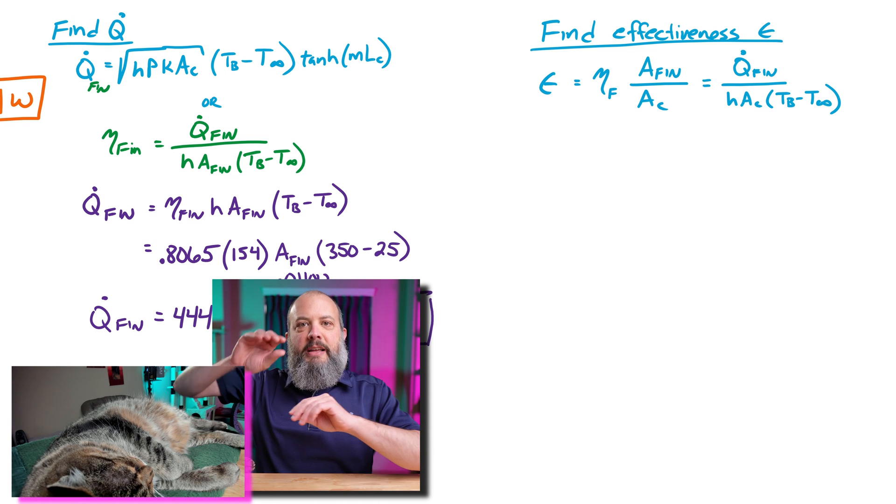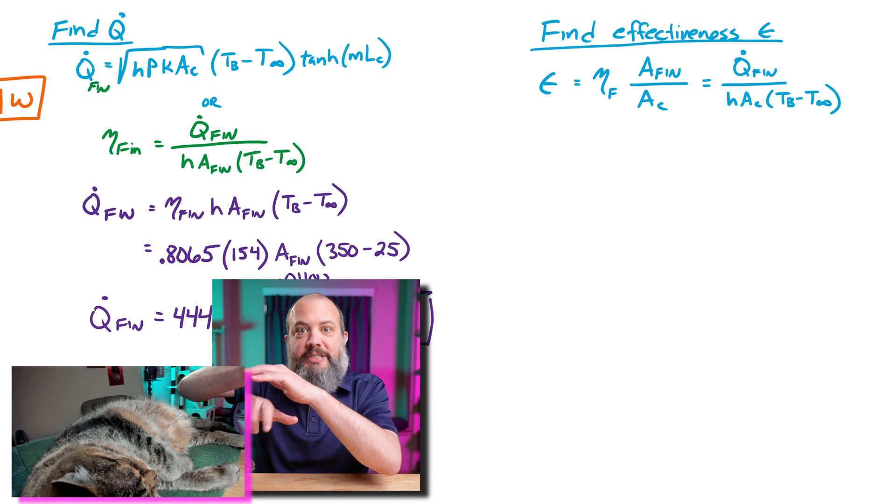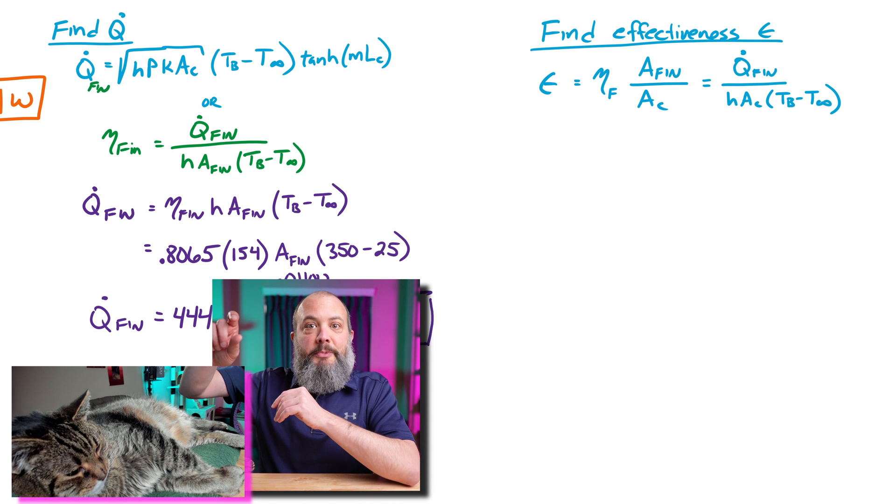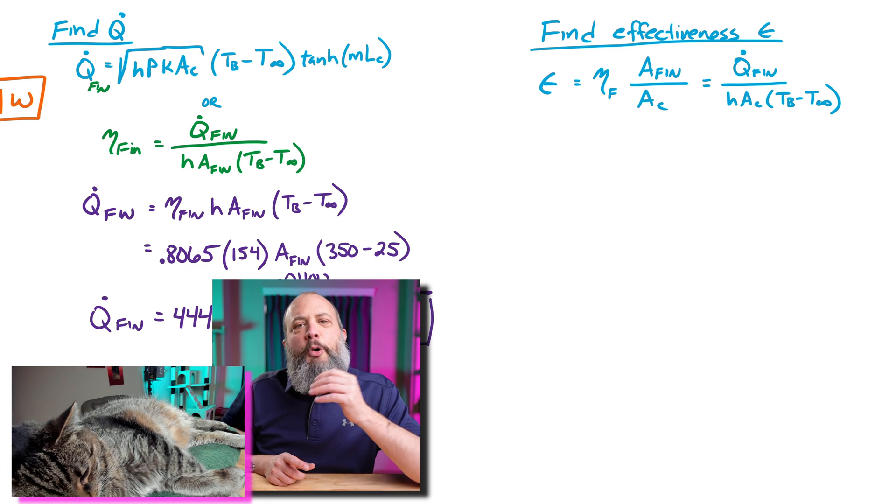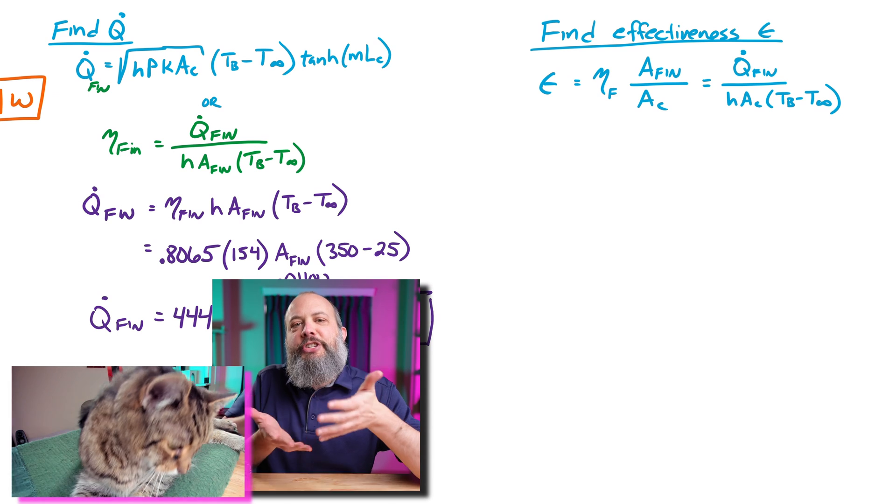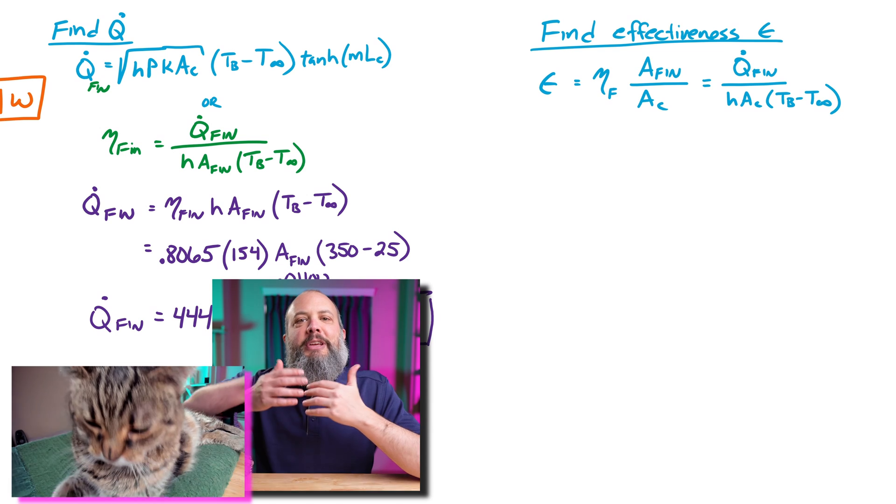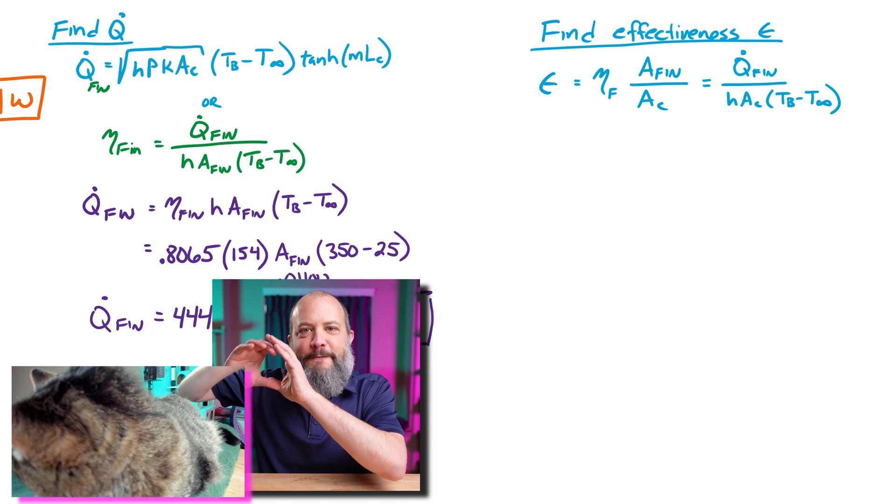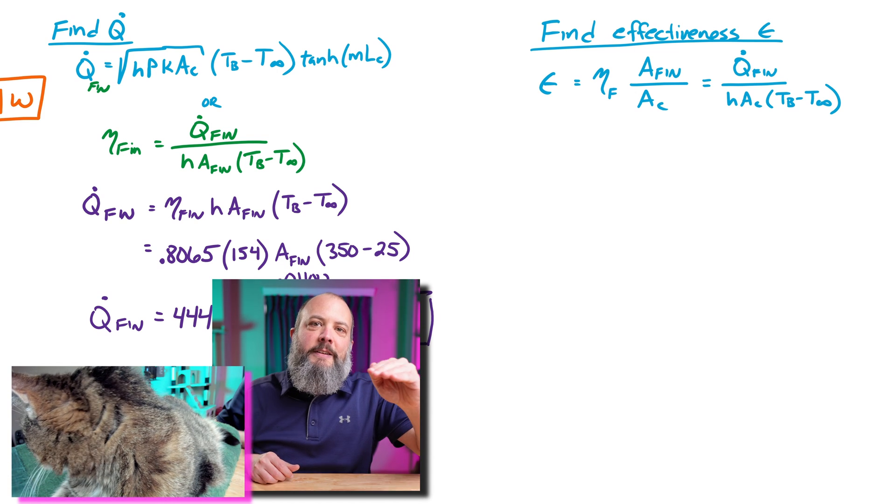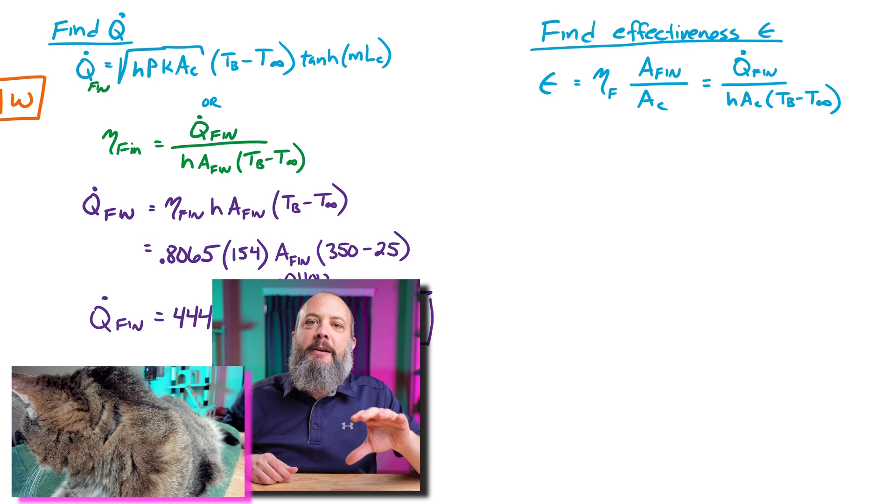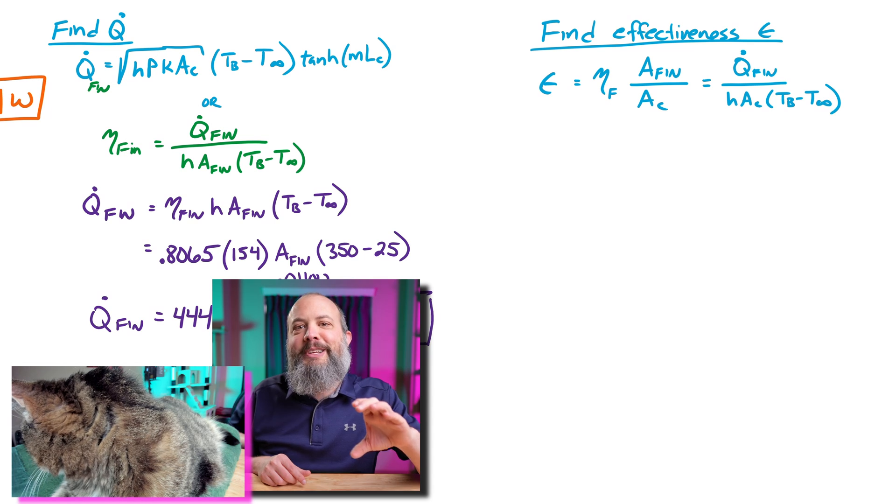And so if effectiveness is actual heat transfer from the fin divided by the heat transfer you would get just from the cross-sectional area, we already found the heat transfer from the fin. So we could calculate a new heat transfer term. How much heat transfer would there be from convection just out of this cross-sectional area? But we don't actually need to do all of that because the efficiency term already kind of did that. And so this equation actually reduces to you can calculate fin effectiveness as just your fin efficiency times a ratio of your areas. The surface area of the fin divided by the cross-sectional area of the fin, which is essentially the surface area of the fin divided by the surface area of the wall that the fin covers up. And it's a ratio of how much more surface area you have by adding the fin.